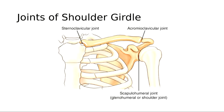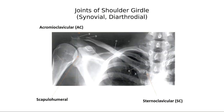We also have the sternoclavicular joints, or SC joints, between the sternum and the clavicle, and the AC joint between the acromion process of the scapula and the acromial end of the clavicle. So we have those three joints making up the shoulder girdle, and they are all synovial joints, meaning they have synovial fluid, and they are diarthroidal.